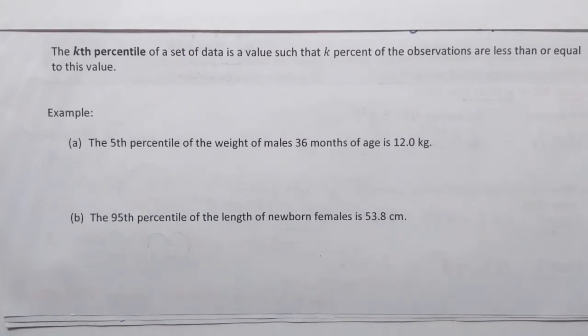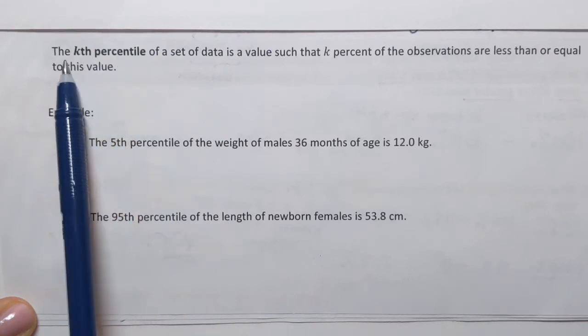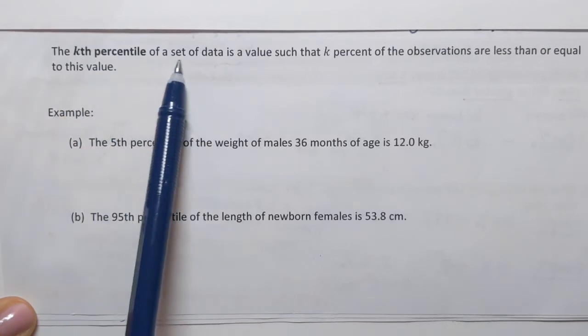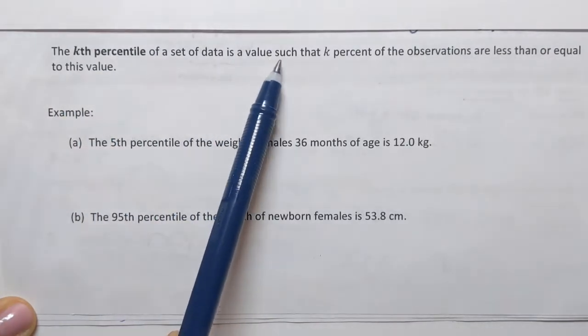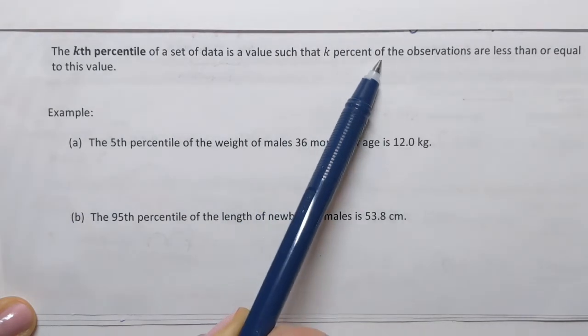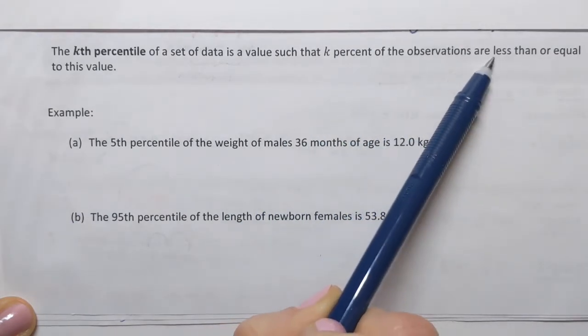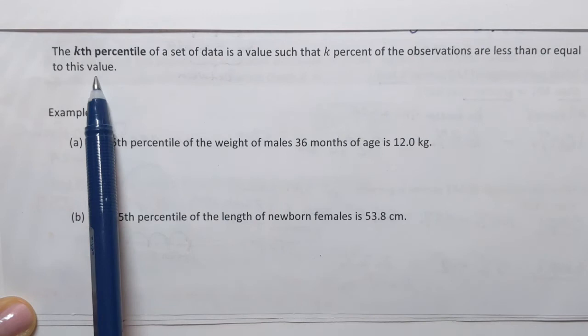In this video we're going to learn how to interpret percentile. So here's the definition of percentile. It says that the kth percentile of a set of data is a value such that k percent of observations are less than or equal to this value.